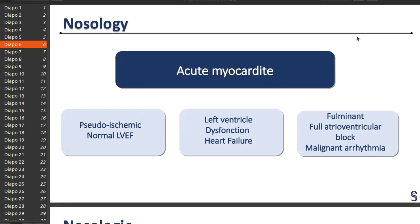There are three clinical presentations. The pseudo-ischemic presentation looks like an infarctus — basically a man with chest pain but with a normal left ventricle, so no infarctus. There is also the patient who will come with left ventricle dysfunction and heart failure. And then the worst: the fulminant presentation, where the electrical conduction pathways are destroyed by the myocarditis, with an atrioventricular block and arrhythmia.